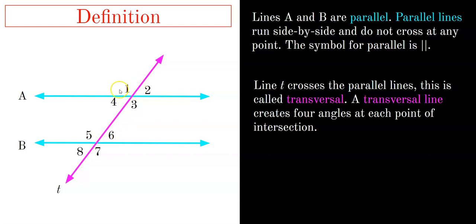For example, at line A we have angle 1, angle 2, angle 3, and angle 4. Coming down to where line B is, we have angle 5, angle 6 coming off the transversal and line B, angle 7, and angle 8.